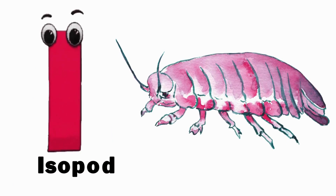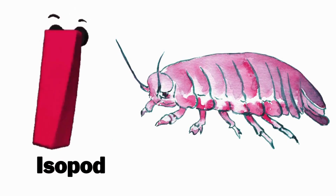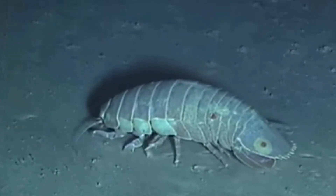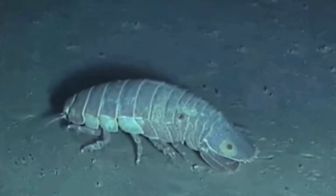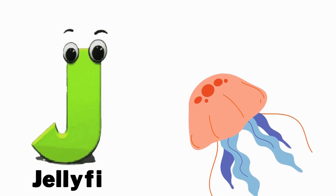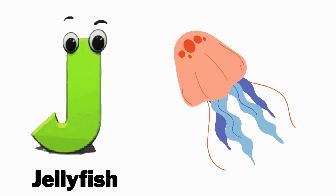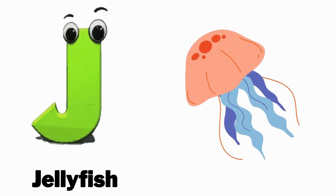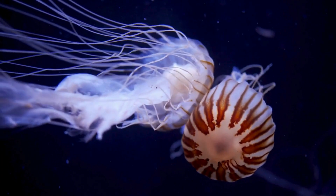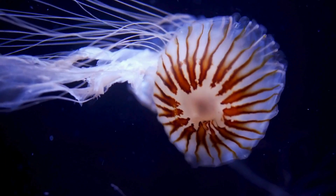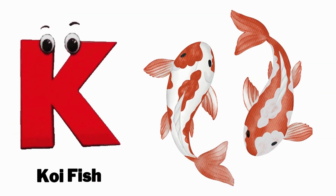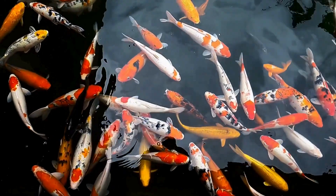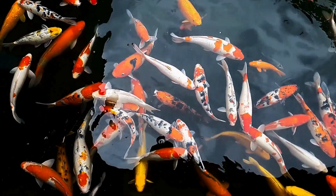I is for isopod. J is for jellyfish. K is for kingfish.